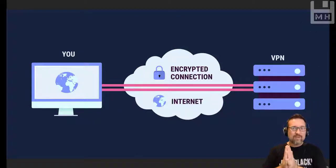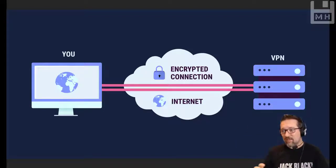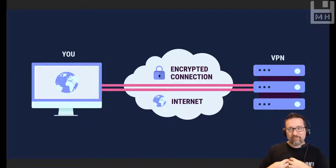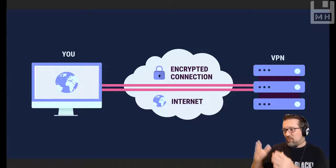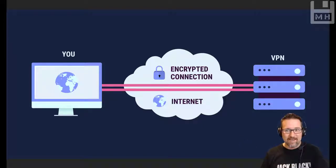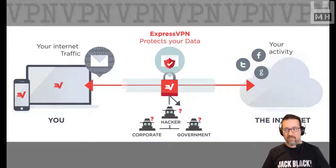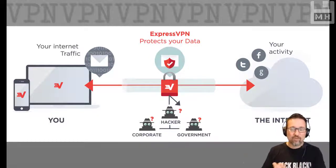Here you can see an illustration of a typical VPN. There's you, connected through the internet - that cloud - with an encrypted connection to another server or computer online. That is a virtual private network, and it means you can then browse the internet without being tracked.